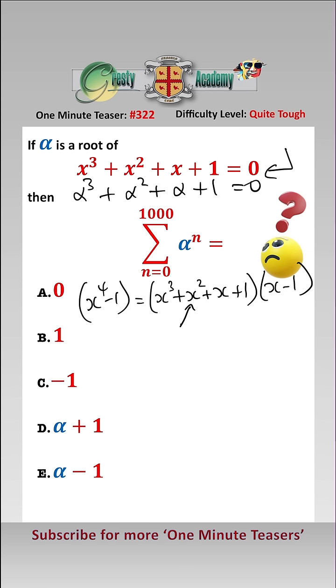Therefore, any root of this, i.e. alpha, is also a root of this, which means that alpha to the four equals one.